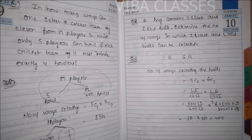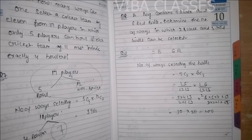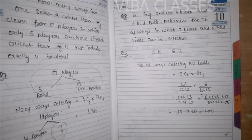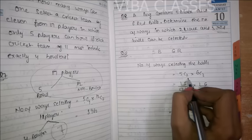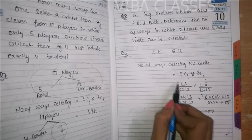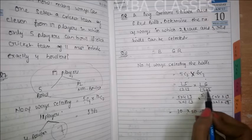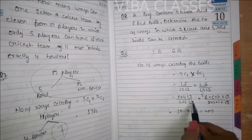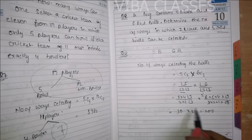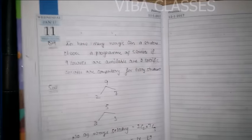Question number 8: A bag contains 5 black and 6 red balls. Determine the number of ways in which 2 black and 3 red balls can be selected. Aapke paas 5 black aur 6 red balls hain. Aapko 2 black aur 3 red select karni hain — total 5 balls. Toh 5C2 into 6C3. Factorial formula lagaane par factorial 3 se factorial 3 cancel hoga aur aapke paas 200 ways aayenge.